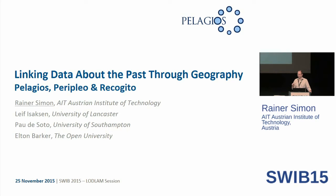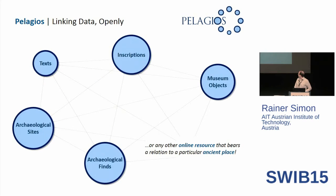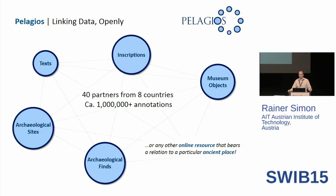Has anybody ever heard of the Pelagios project before? A few people, so that's cool. For those who don't, I'm going to give you the whole introduction today. So what is Pelagios? It's a very free-form initiative, a collective of people with the interest of connecting data about the past, and the way we do it is by geography. Space is the interconnection medium we use to connect online resources, and at the moment we have around 40 partners from around eight countries. Those partners together have accumulated one million annotations.